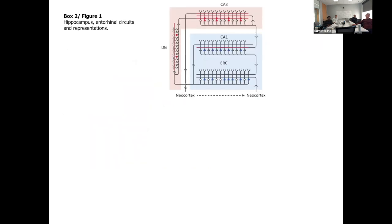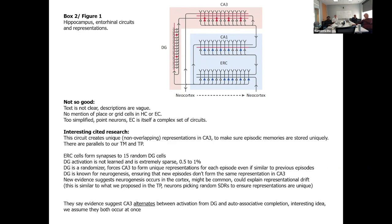This is a circuit diagram of the entorhinal cortex and hippocampus. CA1 and CA3 are in the hippocampus proper, EC is the entorhinal cortex, DG is the dentate gyrus. The pink areas are fast learning and blue areas are slow learning — mostly point neurons. The neocortex projects into and out of this circuit. The descriptions were vague, with no mention of place cells, grid cells, or sensorimotor function. But there's interesting research cited around this figure about how the circuit creates unique non-overlapping representations in CA3 — what you need for episodic memory — so you can remember one instance of the same set of objects differently from another.